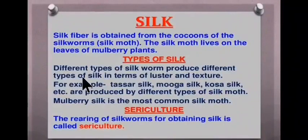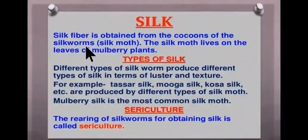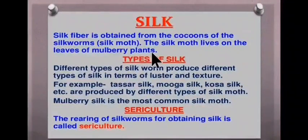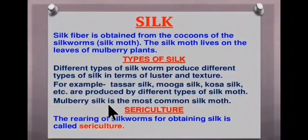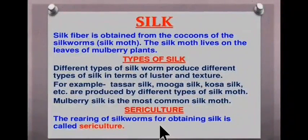The next animal fiber to study is silk. Silk fiber is obtained from the cocoon of the silk worm or silk moth. Silk moth lives on the leaves of mulberry plants. Different types of silk worms produce different types of silk in terms of lustre and texture — for example, tassar silk, muga silk, kosa silk, etc., produced by different types of silk moth. Mulberry silk is the most common silk. The rearing of silk worms for obtaining silk is called sericulture.